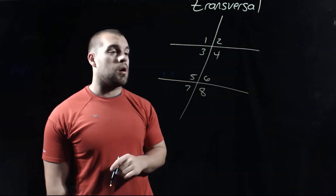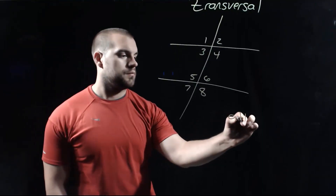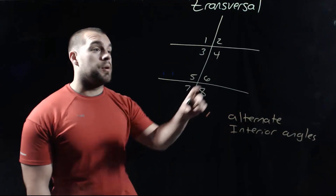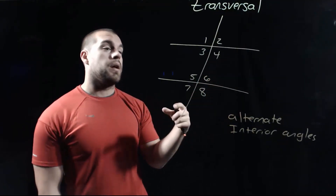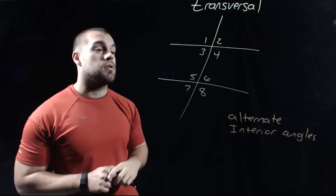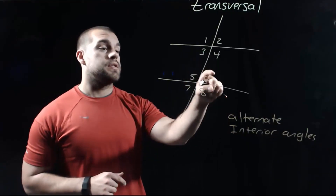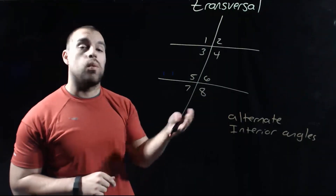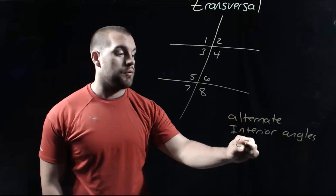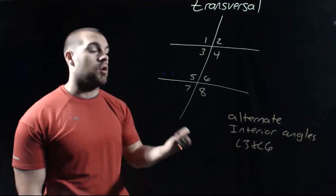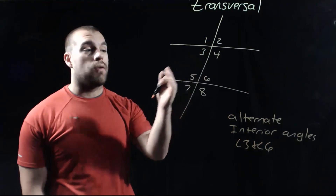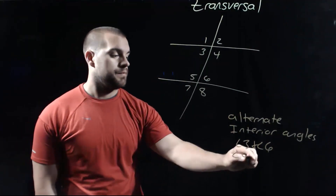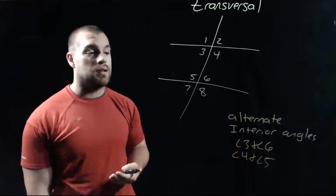The next angle pair we're going to talk about are called alternate interior angles. These are angles that are between our two original lines, but on the opposite sides of the transversal. Angle three and angle six are both between our two original lines and on opposite sides of the transversal — one's on the left side, one's on the right side. We've also got angle four and angle five being between those two lines and on opposite sides, so we've got two pairs of alternate interior angles.